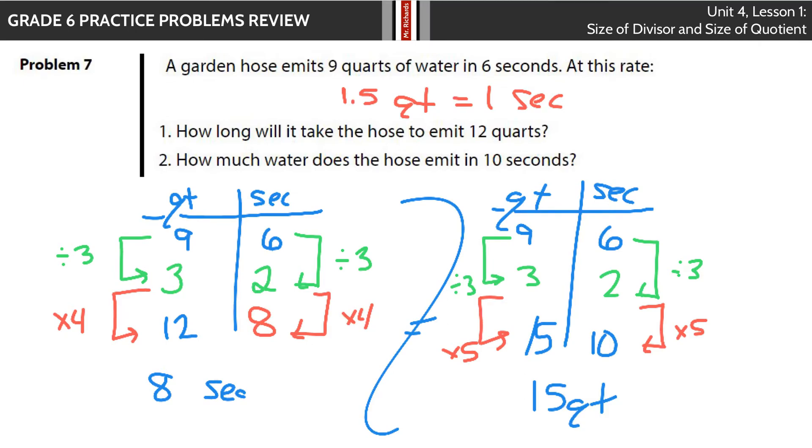I use the table method. 9 quarts, 6 seconds, I need to get to 12 quarts. I can simplify dividing both by 3, so 3 quarts in 2 seconds, and then multiply by 4, 12 quarts in 8 seconds. So 8 seconds.